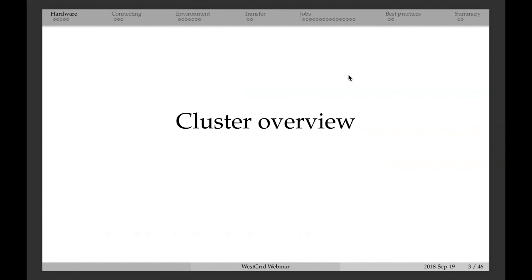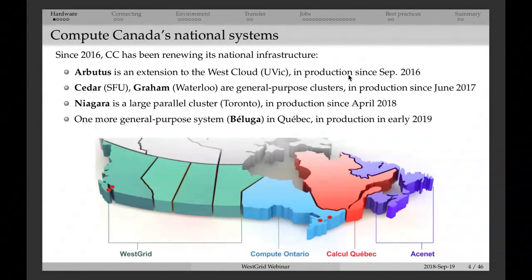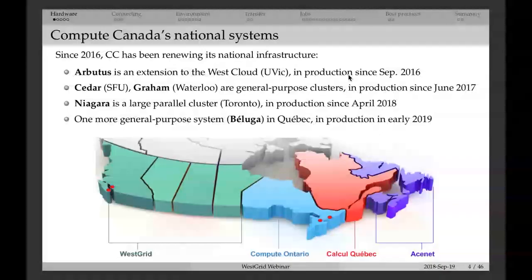For the past two years, we had a number of systems go into production. The major expansion started with Abacus, a cloud system at the University of Victoria that went into production two years ago. It's a cloud system for spinning virtual machines — it's not a cluster, so I'm not going to talk about Abacus today. Today I'm going to talk about regular high-performance computing clusters — HPC systems such as Cedar and Graham. Cedar is a supercomputer at Simon Fraser University, where I'm based. Graham is a cluster at the University of Waterloo. These two systems went into production a bit more than a year ago and are meant to be general-purpose clusters for running any type of jobs: large parallel, small parallel, serial, and so on. Their setup is very similar.